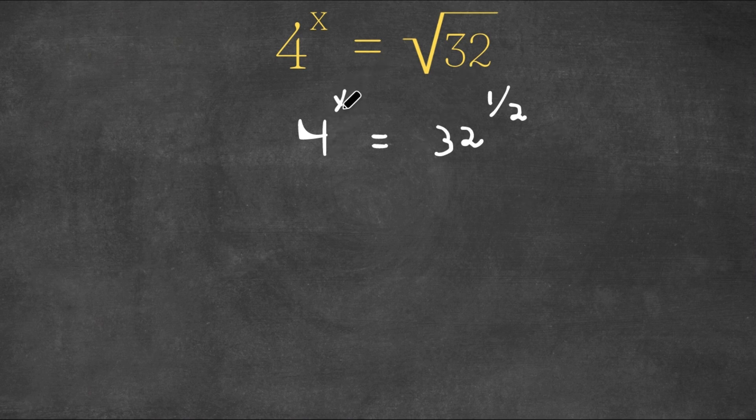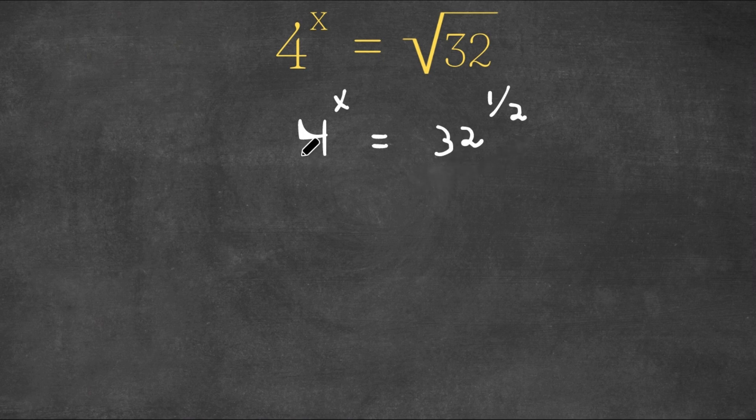Now, when we're solving problems such as these, we always want to change these two bases so that they're the same. So what is a common factor of 4 and 32 that we can change these two bases to? Well, 2 would work.